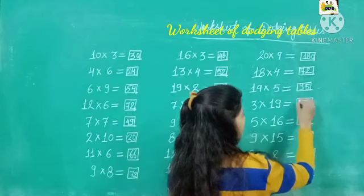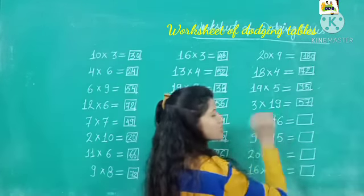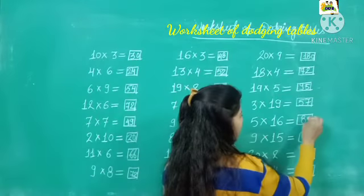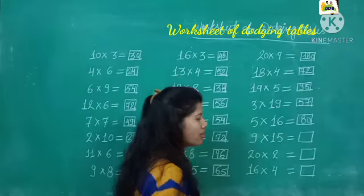5 sixteens are. 16 se multiply karenge, 5 sixteens are 80. 16 fives are 80. Or 5 sixteens are bhi 80.